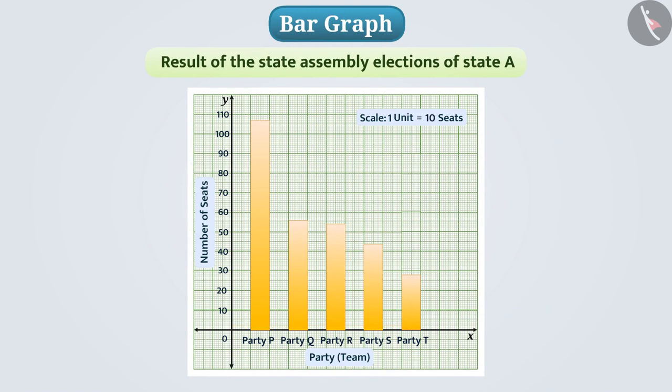Let us now know how to read a bar graph. Here we see that the length of bar made for party Q represents 56 seats. In this way we can say that in state assembly elections party Q won 56 seats. Similarly can you tell how many seats the party R has won? Absolutely right! For the length of bar made for party R, we know that party R has won a total 54 seats.